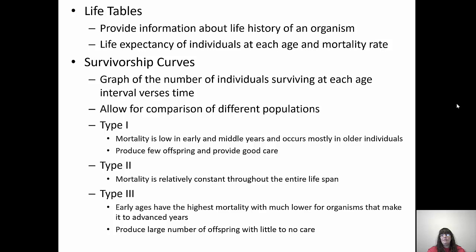Life tables provide information about the life history of organisms — the life expectancy of individuals and their mortality rate. From studying life tables, a few different survivorship curves have been formed. Survivorship curves graph the number of individuals that survive at each age versus time, allowing us to compare different populations and how they survive. There are three different types. Type one has low mortality in the early ages and through middle years, so most individuals die at older ages.